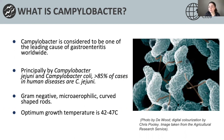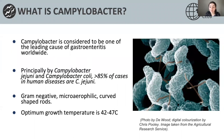Campylobacter is a gram-negative bacterium and you can see from this scanning electron microscope image that it has a spiral corkscrew shape. It also has a flagella which extends from both sides of the bacterium, seen in brown here. In general, Campylobacter is sensitive to environmental conditions such as temperature, the availability of water, and also the availability of oxygen, and it has a limited capacity to survive environmental stress.